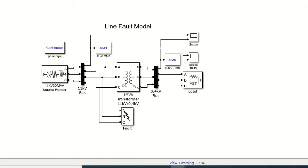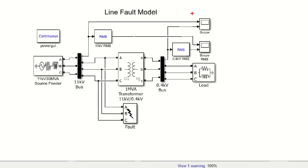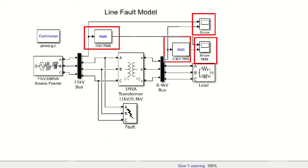Two scopes are used in this model. This scope is used to measure the instantaneous voltage at the sending end as well as receiving end side of the power system. Whereas this scope is used to measure the RMS voltage at the sending end and receiving end side. Due to this, two RMS blocks are connected here at the sending end as well as receiving end to convert the instantaneous voltage into RMS voltage.